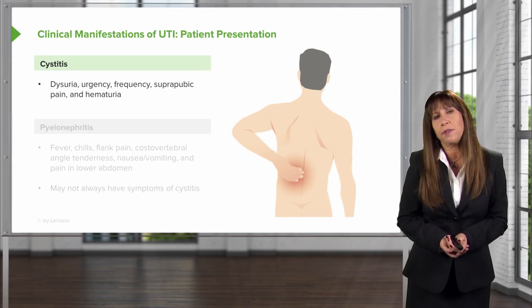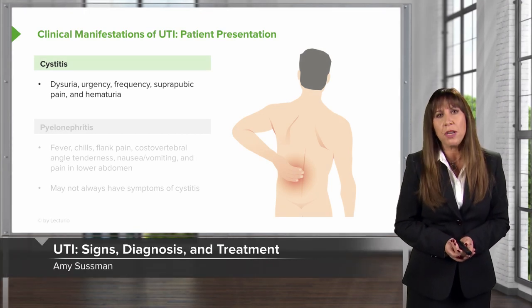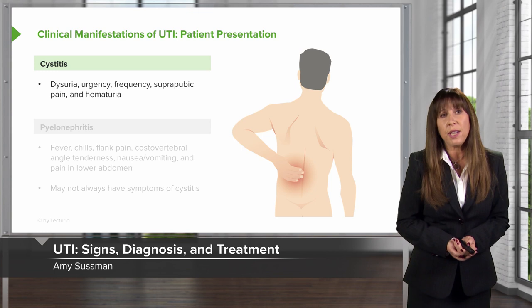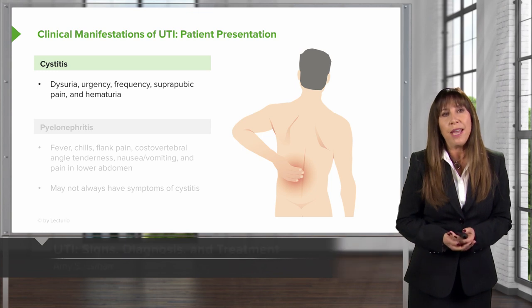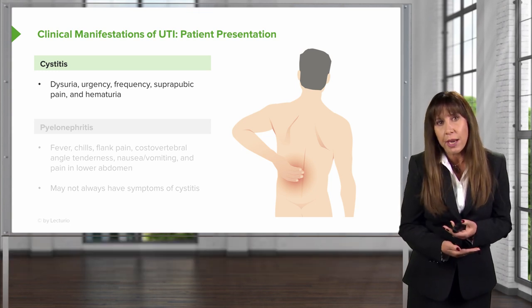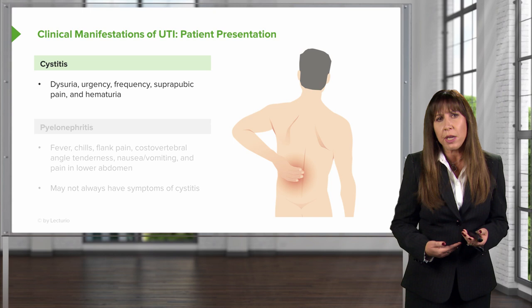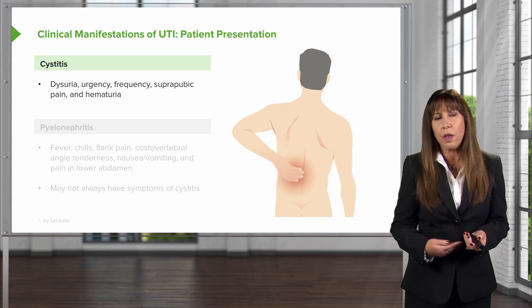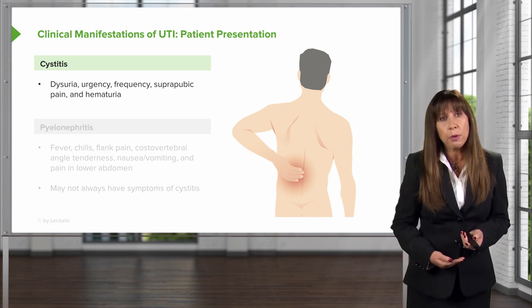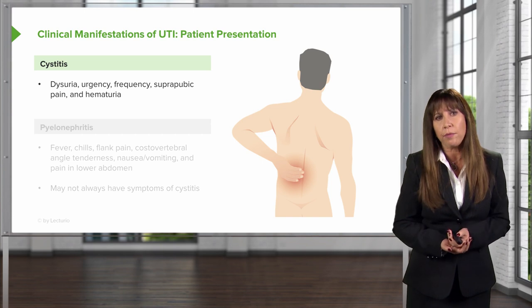What are some of the clinical manifestations of UTI, and how do our patients present? With cystitis, patients will complain of irritative voiding habits — that means burning with urination or dysuria, urgency, frequency to void, suprapubic pain, and possible hematuria.